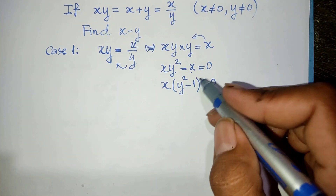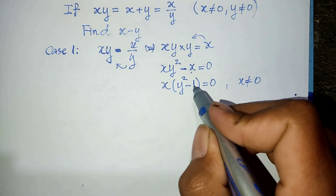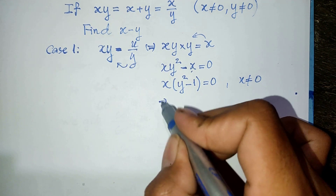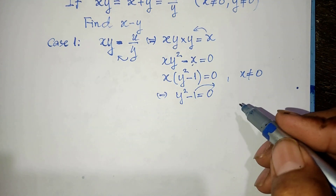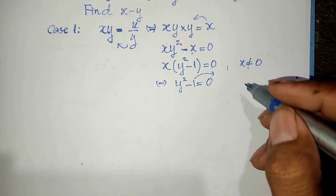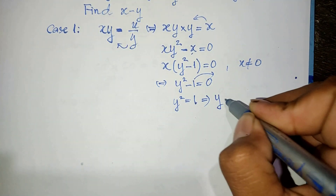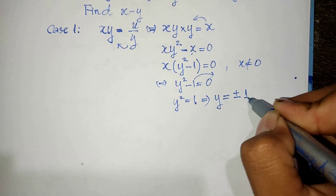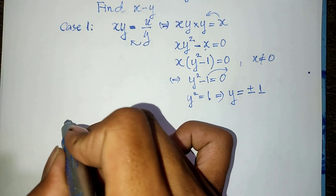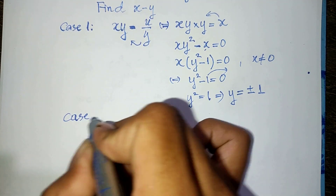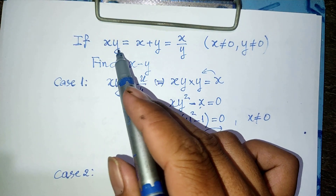But we know that h is non-zero, so we get y squared minus one equals zero. Therefore y squared equals one, and we get the values of y equal to plus or minus one.